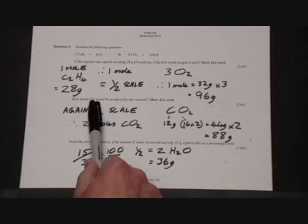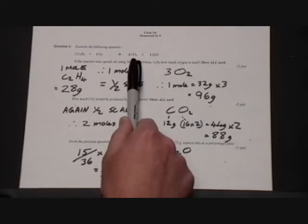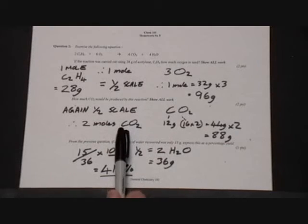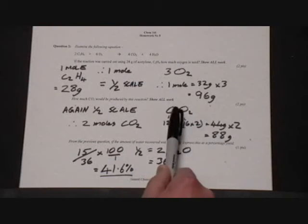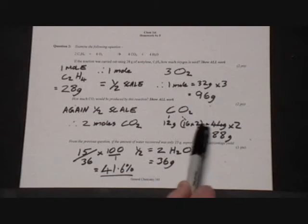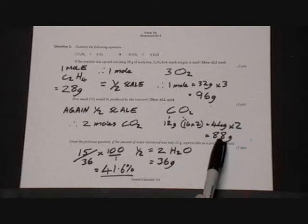Working out the amount of carbon dioxide, again it's half the scaling. So if the original equation used four moles, we need to know the mass of just two moles. From the formula, 12 grams for carbon, 16 grams for oxygen times 2. One mole is 44 grams, so twice as much is 88 grams.